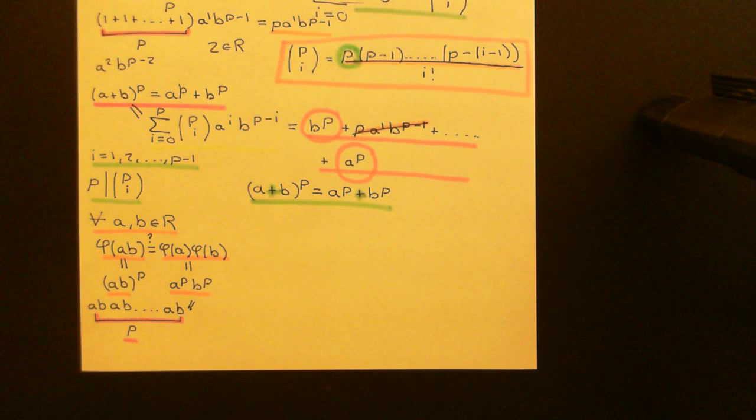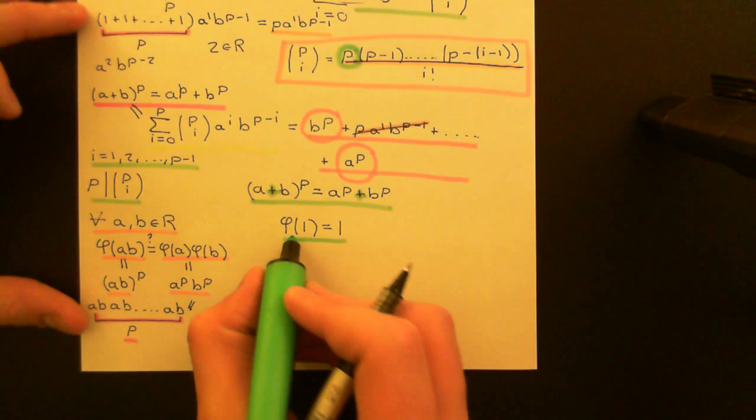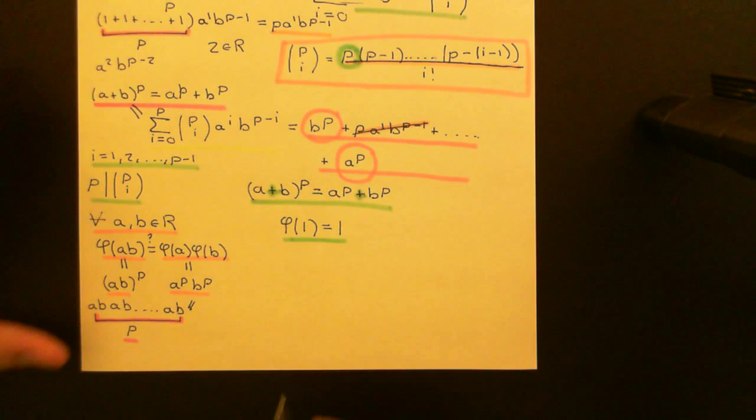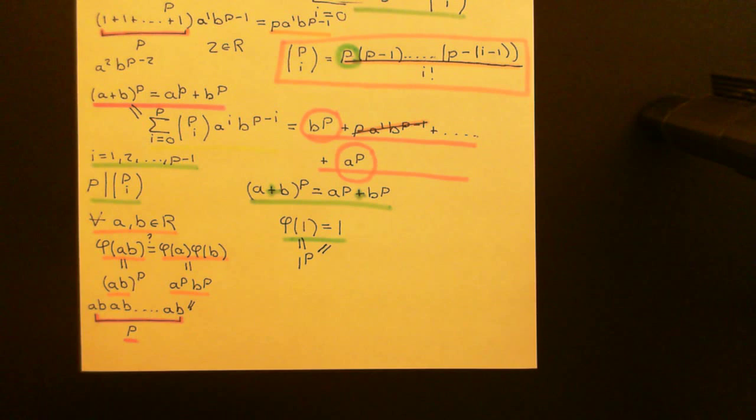One final thing we need to prove is that the multiplicative identity of the domain ring is carried to the multiplicative identity in the codomain ring, i.e. that the Frobenius endomorphism maps the multiplicative identity onto the multiplicative identity. This is true just by applying the definition: one to the power of P is one. Multiply one by itself as many times as you like, you still get one.